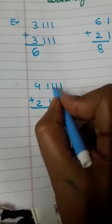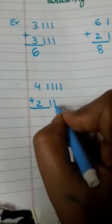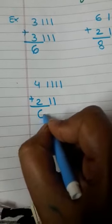Count all the strokes: 1, 2, 3, 4, 5, 6. Our answer is 6.